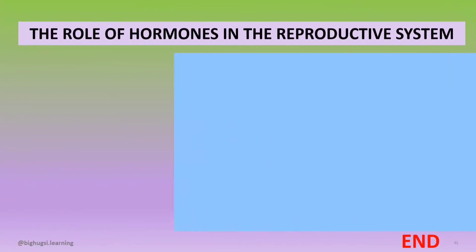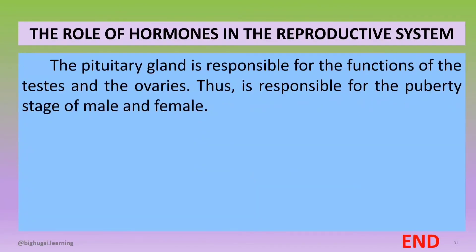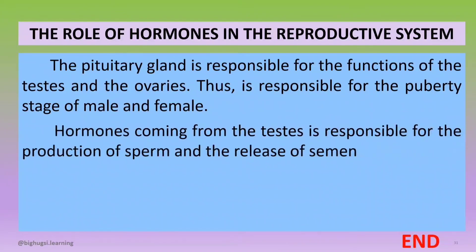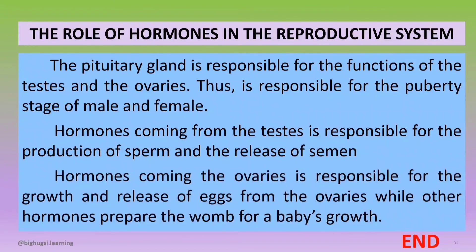The follicle-stimulating hormone causes several immature eggs along with their surrounding follicle cells in the ovaries to begin to develop. The developing follicle cells release increasing amounts of estrogen. The pituitary gland is responsible for the functions of the testes and the ovaries. Hormones from the testes are responsible for the production of sperm and the release of semen. Hormones from the ovaries are responsible for the growth and release of eggs, while other hormones prepare the womb for the baby's growth.